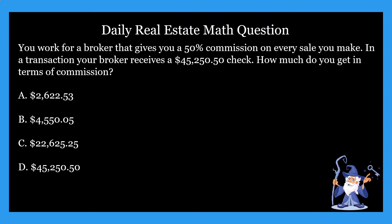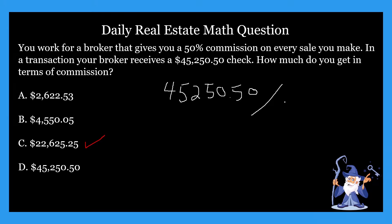Alright, so hopefully you guys came up with your answer. What is the correct answer for this one? Well, it's going to be C — that's right, it's $22,625.25. That is how much you would get in terms of commission, and think about it — it's 50% of this right here. So let's do the math real fast. We're going to take that $45,250.50 and then divide that by 0.5, or of course 50%. And what are you going to get for that? You're going to be getting that number right there: $22,625.25.